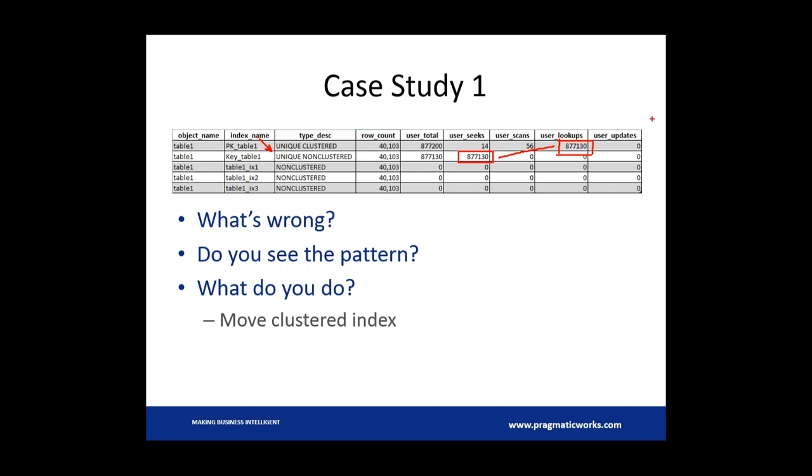I don't have the columns in here and you would want to take a look at them because it could be that this non-clustered index has maybe 14 different columns. In that case you probably wouldn't want to cluster on it. But if it's a narrow index and you've got this kind of correlation, what you're going to want to take a look at is whether moving the clustered index is a way to solve this problem.